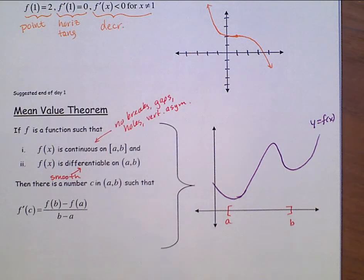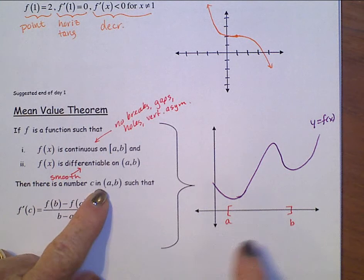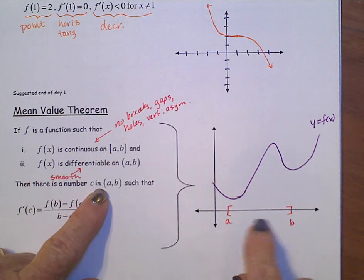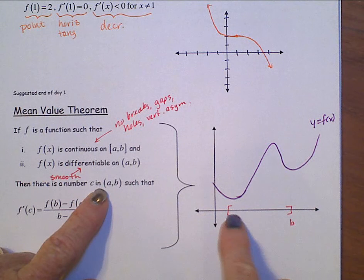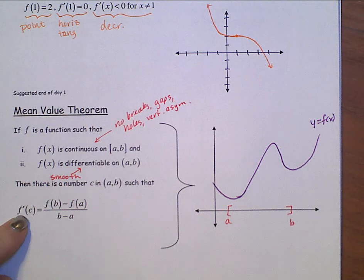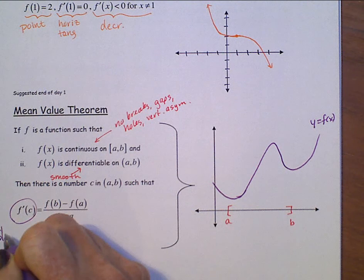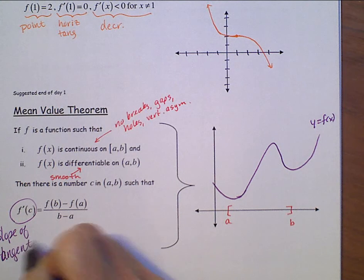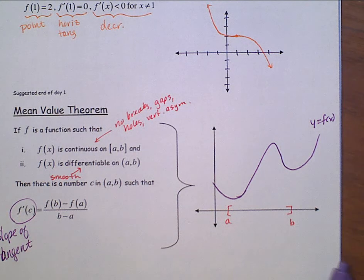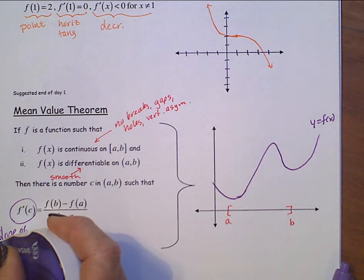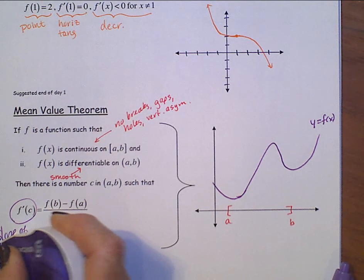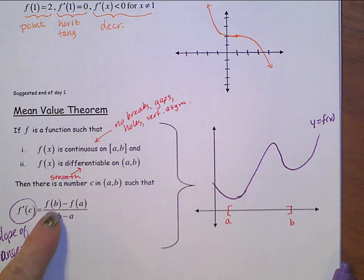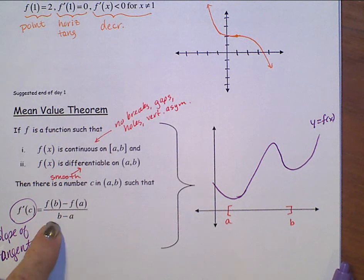Now, it says that there's a number c in here, in between a and b. So, c is in here such that f prime at c, slope of the tangent, and slope of a tangent line is equal to, oh boy, f of b minus f of a all over b minus a.